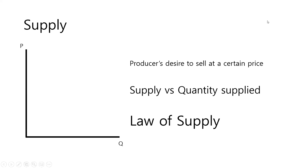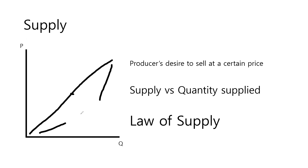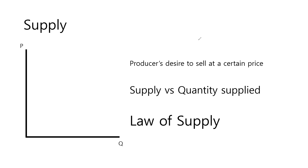Now let's look at supply. Supply is the producers' desire to sell at a certain price, and the supply curve is usually upward sloping. There are also differences between supply and quantity supplied — quantity supplied refers to a specific amount willing to be sold at a certain price, while supply refers to the graph as a whole. The law of supply says that if the price increases, the quantity supplied increases, and if the price decreases, the quantity supplied also decreases.